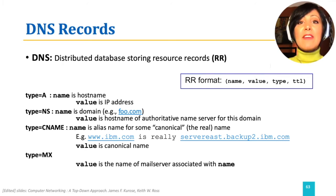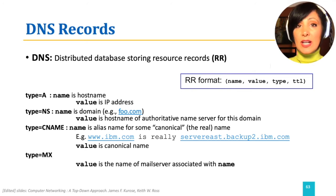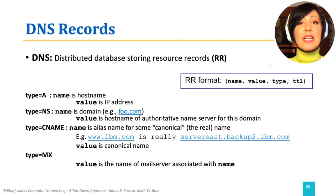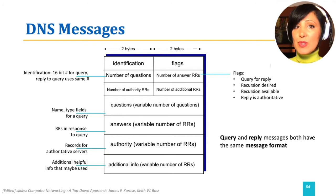If we have a type CNAME, the name is the alias and the value is the canonical name. And if we have a type MX record, the name is the hostname and value is the name of the mail server associated with that name.